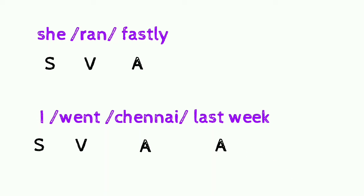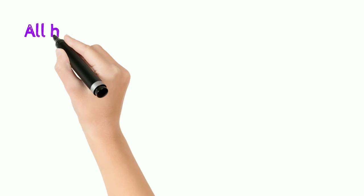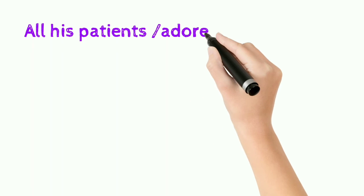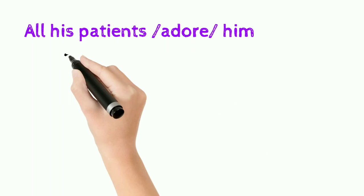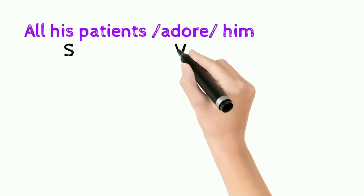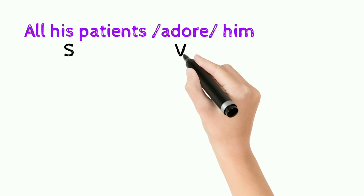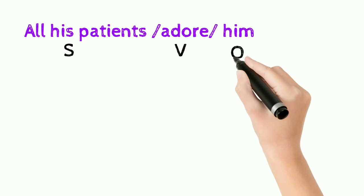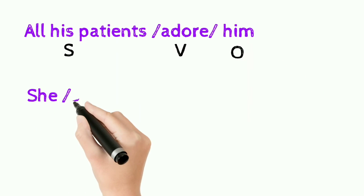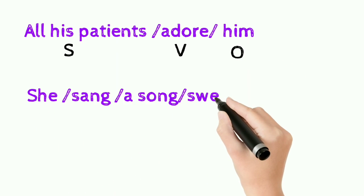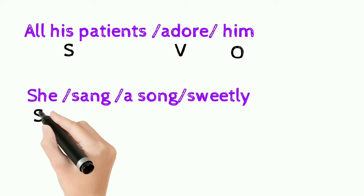I hope you all understand that clearly. Let's see one more example: 'All his patients adore him.' The doer of the action is 'all his patients,' so that is the subject. 'Adore' is the verb. 'Him' answers the question 'whom,' so that is the object.